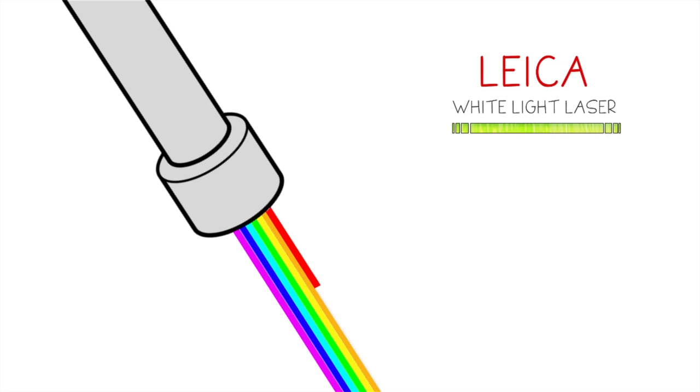The innovative Leica white light laser is a single device that produces a continuous spectral output between the wavelengths of 470 and 670 nanometers.